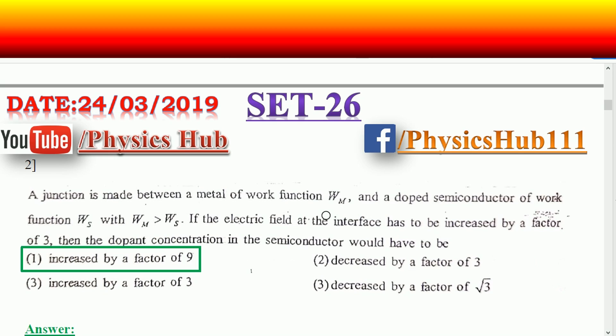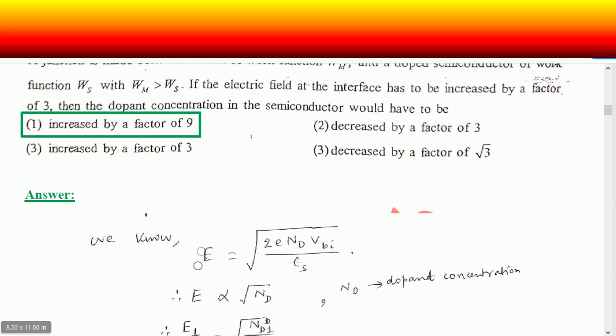Question number two: a junction is made between a metal of work function Wm and a doped semiconductor of work function Ws, with Wm greater than Ws — this produces some ohmic contact. If the electric field at the interface has to be increased by a factor of three, then the dopant concentration in the semiconductor would have to be changed. To solve this we need the expression of electric field at the interface.